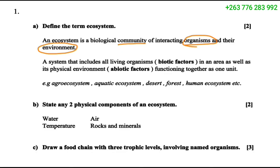There is another definition: an ecosystem is a system that includes all living organisms, called biotic factors, in an area, as well as its physical environment — the non-biotic factors — all functioning together as one unit.